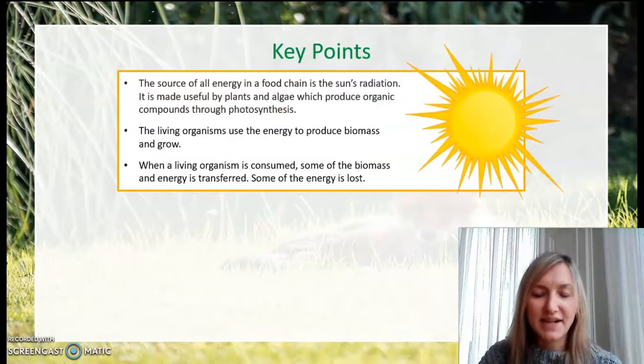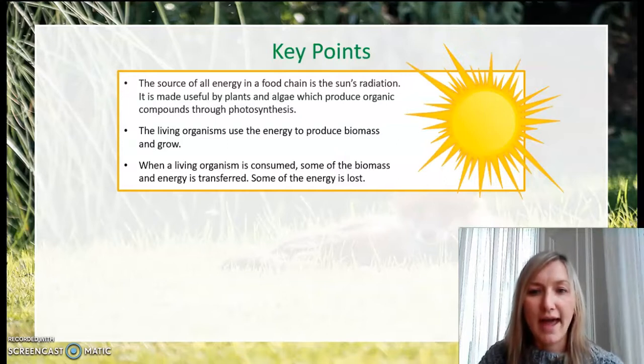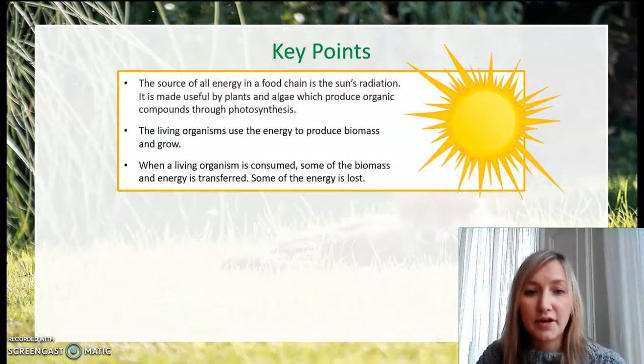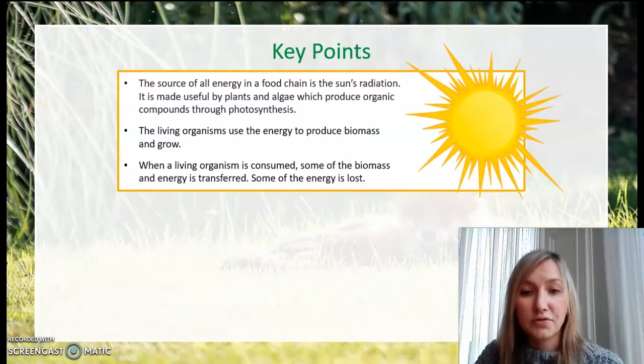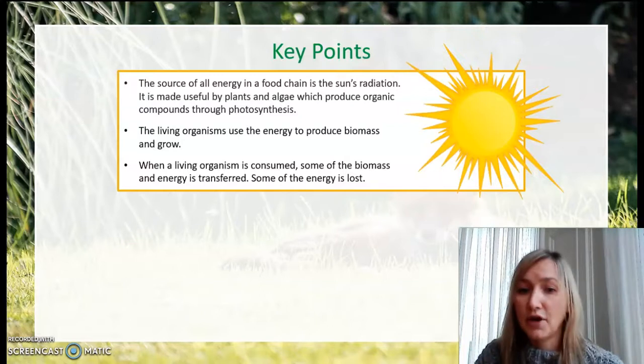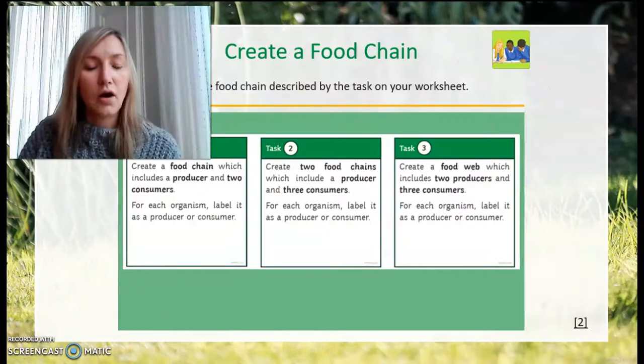Before you get started on today's main worksheet task, I want to go through the following key points. The source of all the energy in a food chain or food web is the energy, the radiation from the sun. It's made useful by plants and also algae that can produce organic compounds through photosynthesis. They produce glucose. The living organisms then use the energy to be able to produce further biomass and grow. And when a living organism is consumed, some of that biomass and energy is transferred. It's important to note that at each stage, each arrow in a food web, some of the energy is lost. 100% of the energy is not transferred, usually because 100% of the animal is not eaten or plant is not eaten. And also some of that energy will have been lost by the animal themselves during the processes involved in being alive.